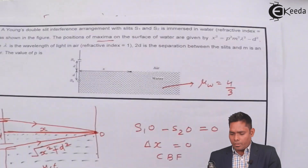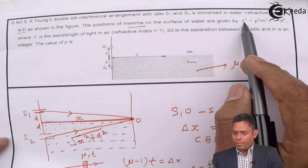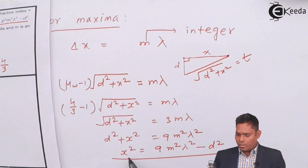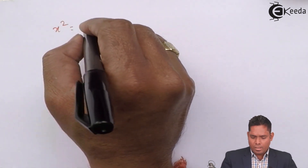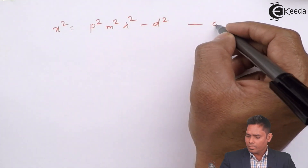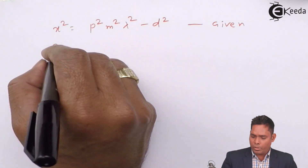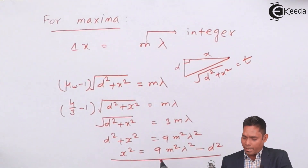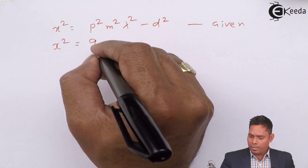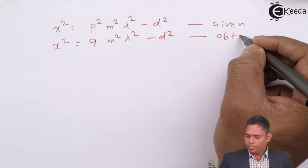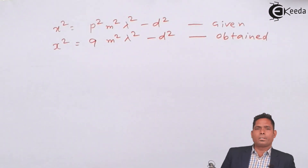Rearranging: x² = 9m²λ² − d². Now comparing this with the expression given in the question, x² = P²m²λ² − d², we can directly compare the two expressions.